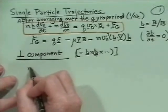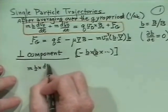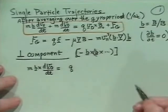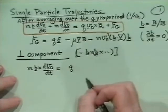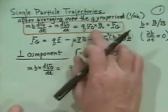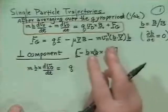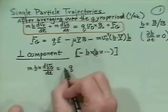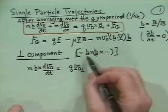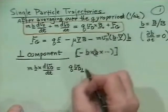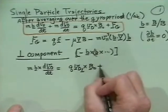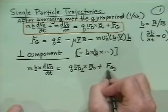So our equation becomes m b × (dv_drift/dt) equal to — for this term, we have b × v × b with a minus sign, and the net result gives us q v_drift_perpendicular, because we take the b × (b × ...) component, still cross B₀. And then we'll have F_guiding_center_perpendicular.